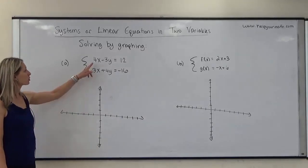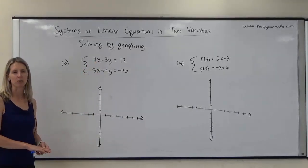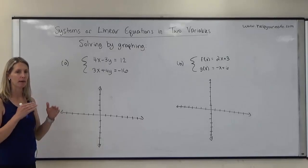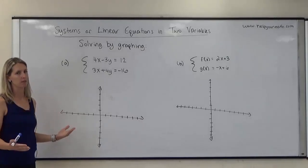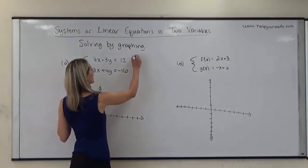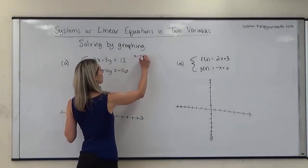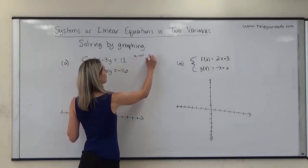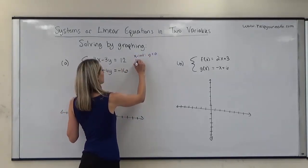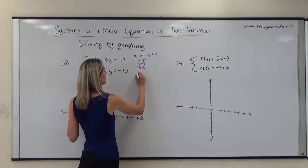For the first equation, it looks like it's going to be nice if I just find the intercepts, so I'm going to find the intercepts for that top equation. If I'm going to find the x-intercept, that means I'm going to plug in 0 for y, and that would give me 4x equals 12, so I get x equals 3, so the ordered pair is (3, 0).